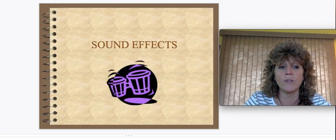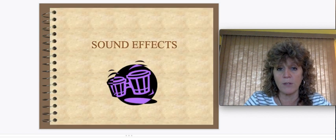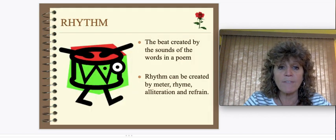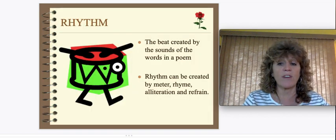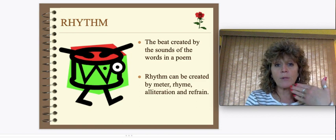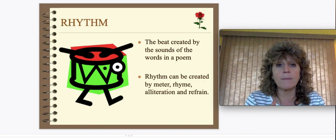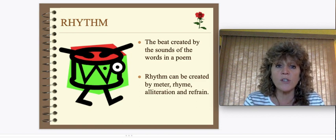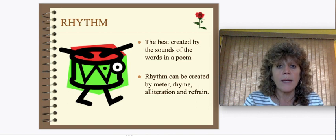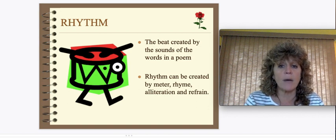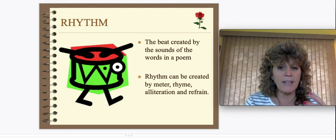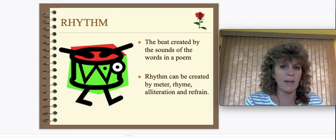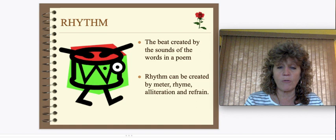Now for some of the sound-effect words we use when talking about poetry. First: rhythm. You guys know what rhythm is — it's the beat. In poetry, rhythm is very important. It's the beat created by the sounds of the words in the poem. Rhythms can be created by what's called meter — which is timing — rhyme, alliteration, and refrain. How the words are organized is what gives the poem its rhythm.